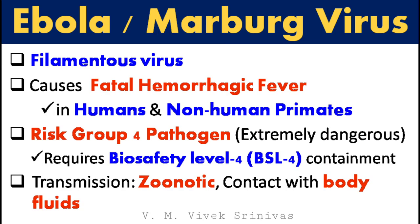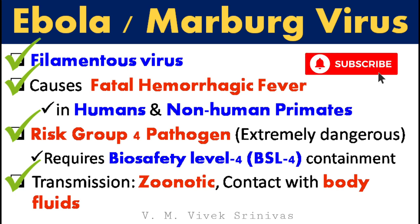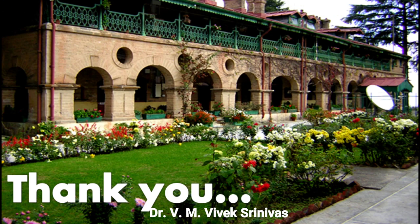Points to remember: Ebola and Marburg viruses are filamentous in morphology. These viruses cause fatal hemorrhagic fever in humans and non-human primates. As per WHO, these pathogens are classified as risk group 4 pathogens, which are extremely dangerous. Suspected samples must be handled only in biosafety level 4 labs. These viruses are zoonotic, and body fluids from infected humans or non-human primates act as the principal source of this virus. With this we come to the end of Ebola and Marburg viral disease. In the next video presentation, we will discuss parvoviral enteritis in detail. Thank you.